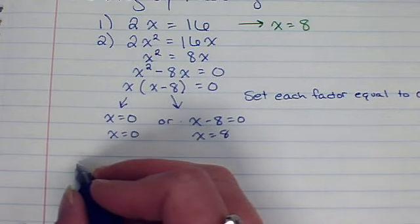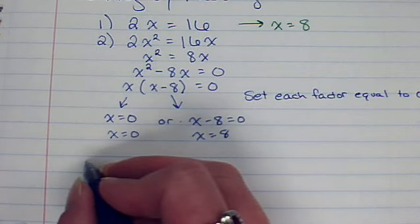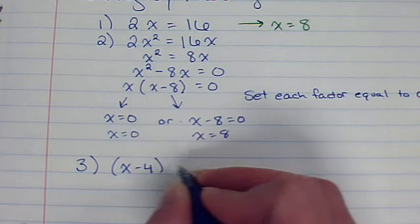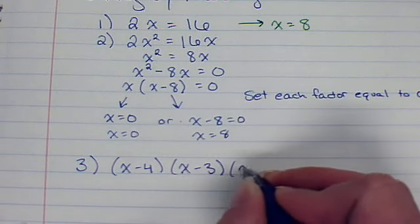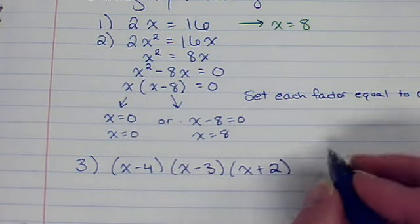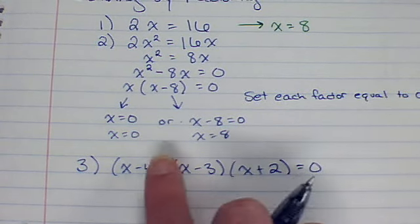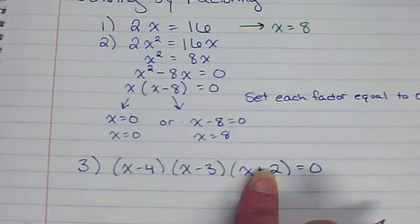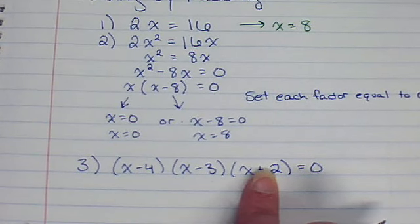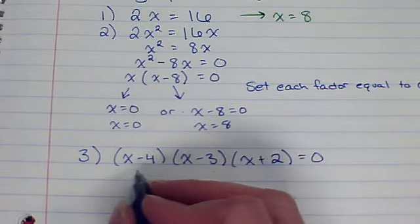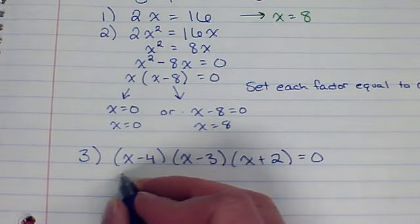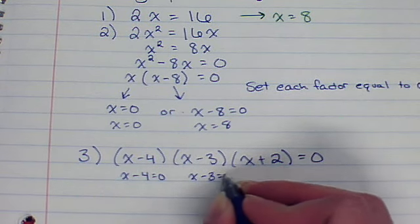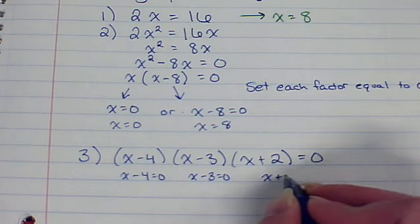Let's look at the next one. This would be number 3. If I had x minus 4 times x minus 3 times x plus 2, it doesn't matter how many factors I have, equals 0. That means that one of these had to be 0. That's the only way I can multiply two or more things and get 0 as an answer. So here, this would be x minus 4 equals 0. This one would be x minus 3 equals 0. Or x plus 2 equals 0.